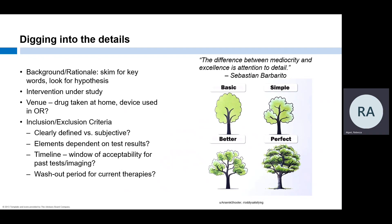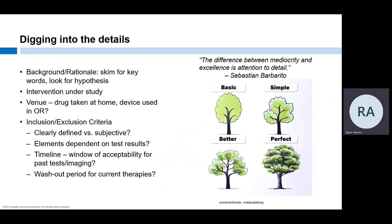My next stop is eligibility criteria. Are they clearly defined? For example, if the protocol says that patients must have normal organ function, how is that measured and defined? Are there specific labs or imaging required? Are there elements that are subjective, like 'in the opinion of the investigator'? What is the timeline for meeting these inclusion/exclusion criteria? Do all tests need to be done at screening, or is it acceptable to use results from a scan the patient had four months ago? Are certain therapies exclusionary, or do patients need to have been off that treatment for a washout period?